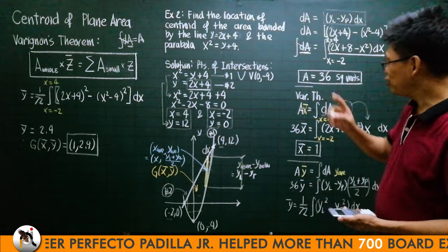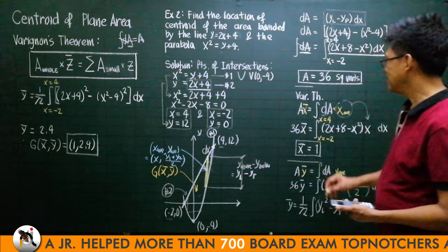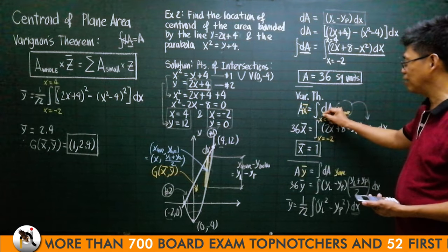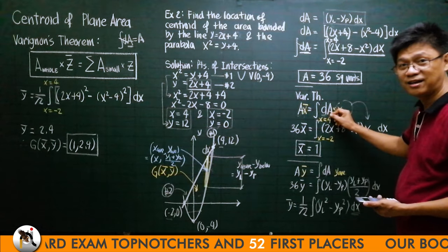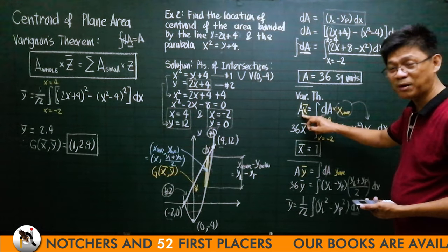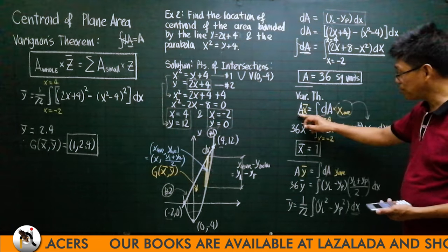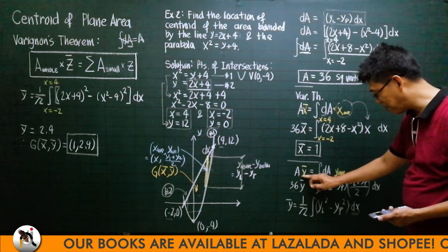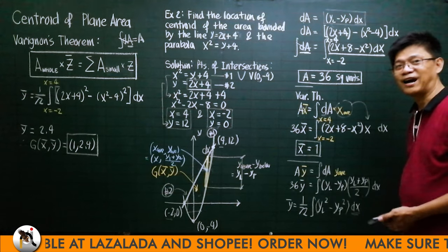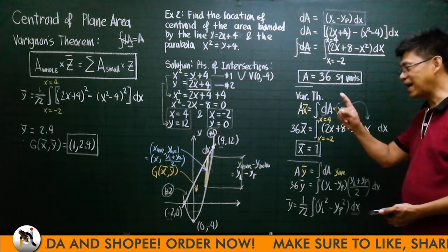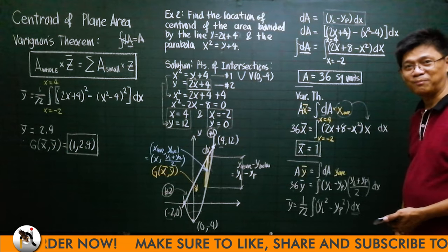To summarize: you begin with the concept that total area equals the integral of the differential area. Multiply the left by X-bar, and you must multiply the right by X-average. Multiply the left by Y-bar, and you must multiply the right by Y-average. That is Varignon's theorem.